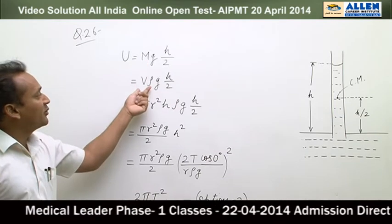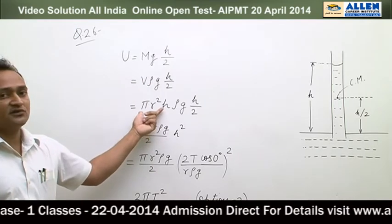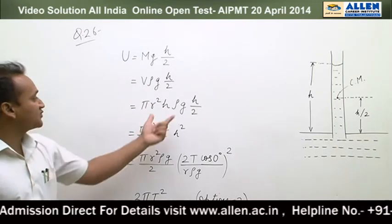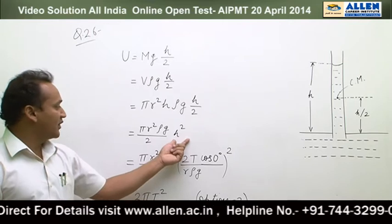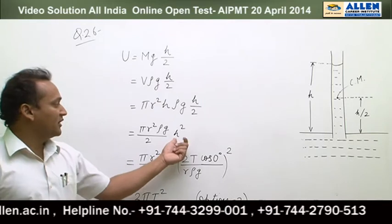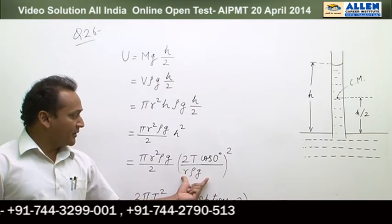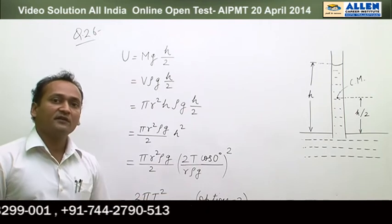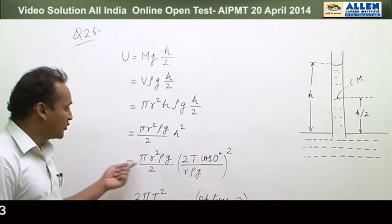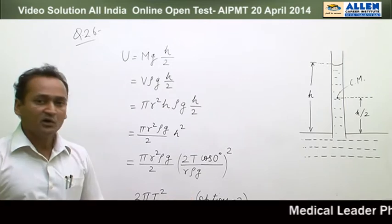We have to calculate the mass as volume multiplied by density. Since these are cylindrical tubes, mass = πr²h × ρ. The center of mass is at h/2. Using the formula h = 2T cosθ/(ρrg), and since the contact angle is 0 degrees, cos 0 = 1. When we calculate the potential energy, the answer becomes 2πT²/(ρg), which is option number 2.